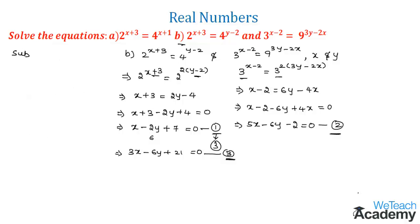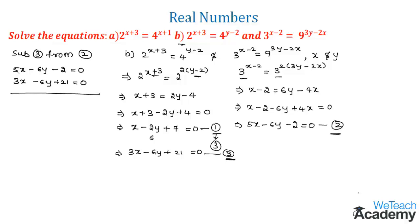We subtract Equation 3 from Equation 2. The y terms cancel since they are similar with opposite signs after sign change. We get 5x - 3x = 2x, and -2 - 21 = -23. So 2x = 23, giving x = 23/2.